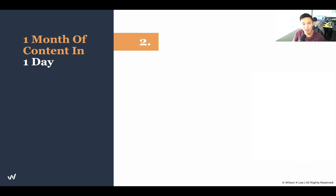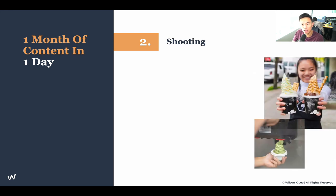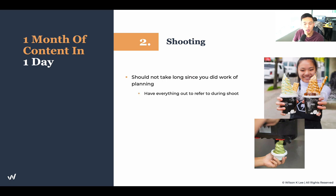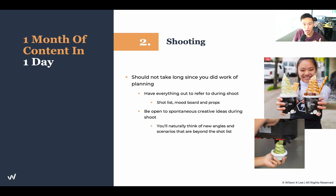Now that we're done with all the planning, it is time for the exciting thing — step two is shooting. It should not take as long as all the prep work. Planning should take around 60% of the time, and the remaining time is on shooting, post editing, and distribution. Have everything out to refer to during your shoot — your shot list, your mood board, your props. Bring all those planned items out during the shoot so you can easily reference them. And be open to spontaneous creative ideas during the shoot. Some of the best shots we had came from spontaneously trying different angles. The shot list is there as reference only — you can deviate from it.